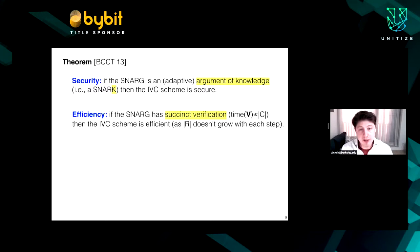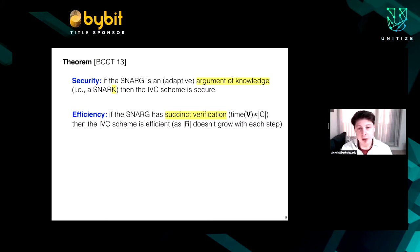But is this construction secure? A theorem from seven years ago says that if the SNARK is a so-called adaptive argument of knowledge — that is what the K in SNARK stands for — then the IVC scheme is secure according to the definition sketched earlier. Moreover, if the SNARK has succinct verification — meaning that checking a proof for a circuit requires much less time than evaluating the circuit itself — then the IVC scheme is efficient. The intuition for why you need succinct verification is that the recursive circuit R won't grow with each step, allowing an unbounded number of recursions.